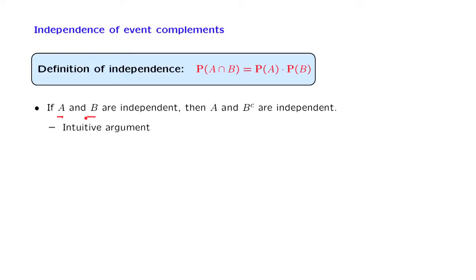Intuitively, if I tell you that A occurred, this does not change your beliefs as to the likelihood that B will occur. But in that case, this should not change your beliefs as to the likelihood that B will not occur. So A should be independent of B complement.